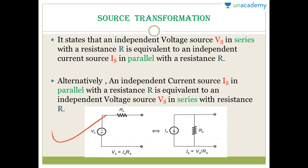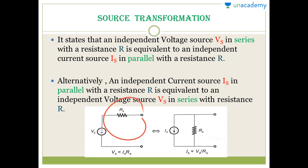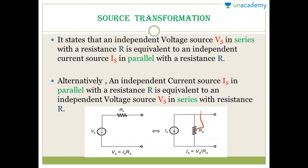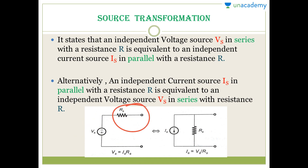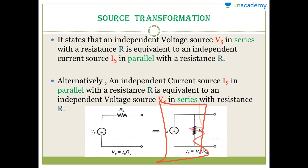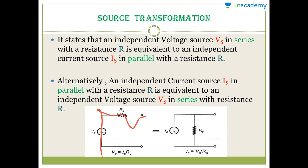Source transformation states that a voltage source V_s in series with a resistance R is equivalent to an independent current source in parallel with the resistance R. Whenever you have a voltage source in series with a resistance, you can convert it into a current source in parallel with that resistance. You can also do the vice versa — convert a current source in parallel with a resistance into a voltage source in series with the resistance.